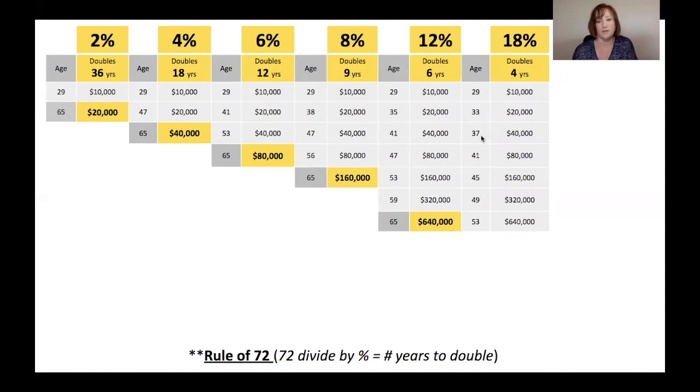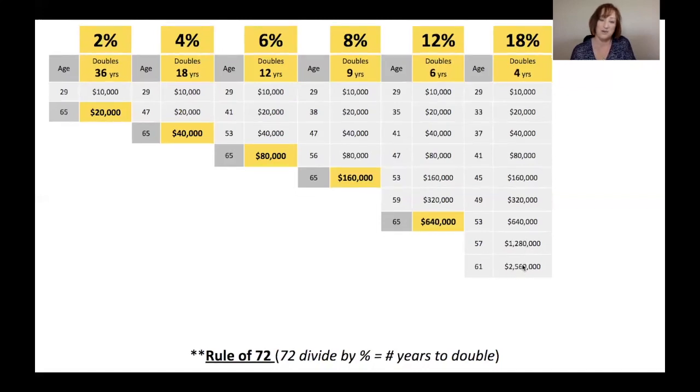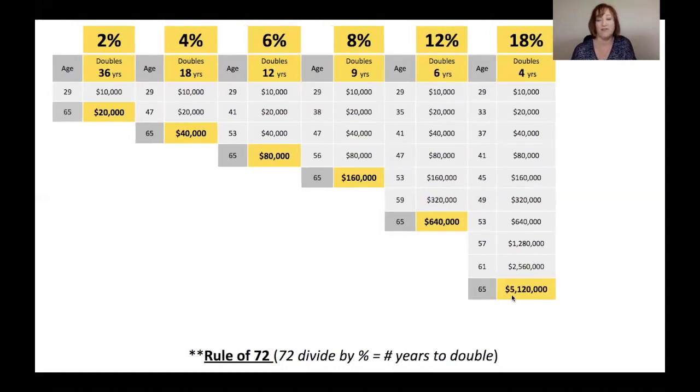And so this works for interest that you're paying or interest that you're earning. So every 4 years, your money is doubling. If you can make 18% on your money, that is really very exciting. $49,000, $320,000. By age 53, $640,000. And it's really exciting as you get a little bit more. By age 57, $1.2 million. So this is a 29-year-old. Put $10,000 away. Never touched it. $1.2 million. By age 61, $2.5 million. And by age 65, $5 million.